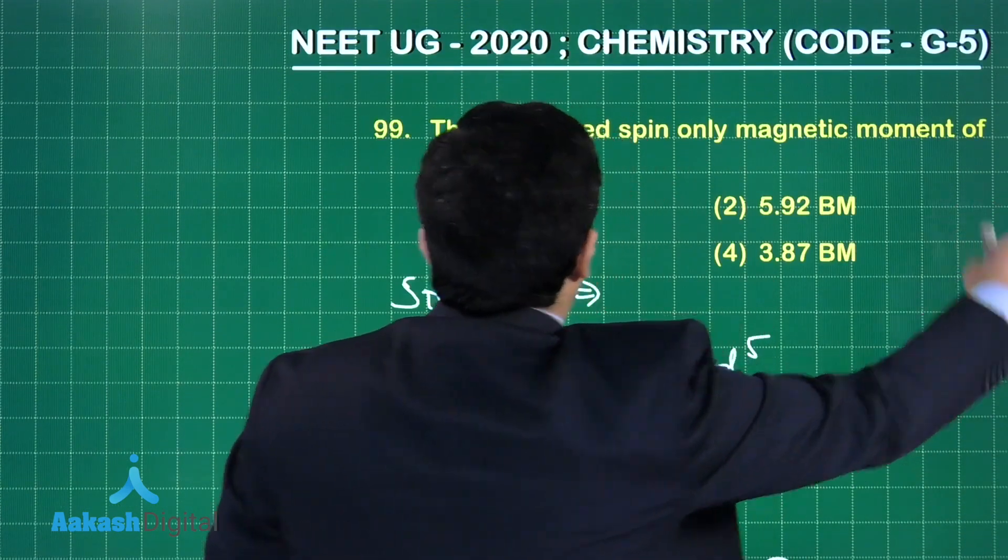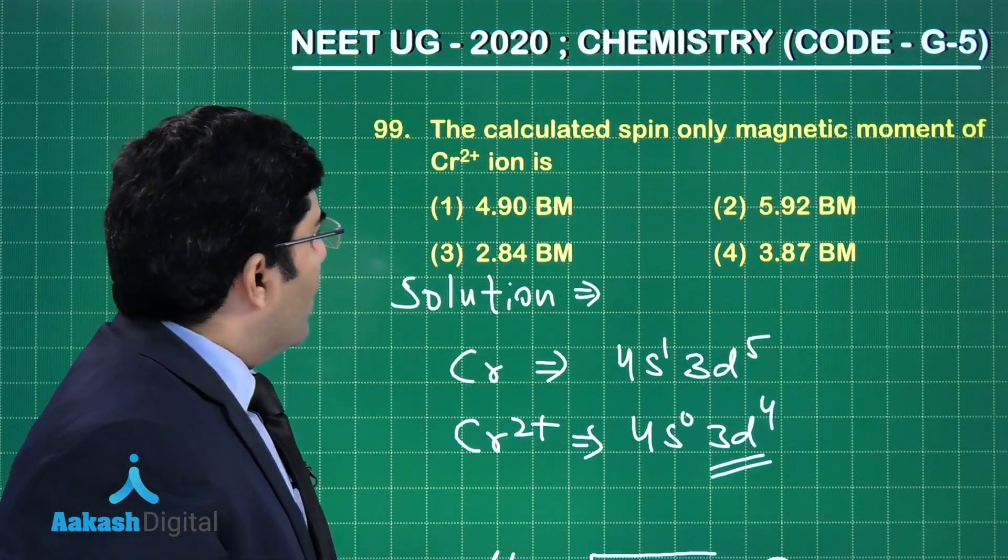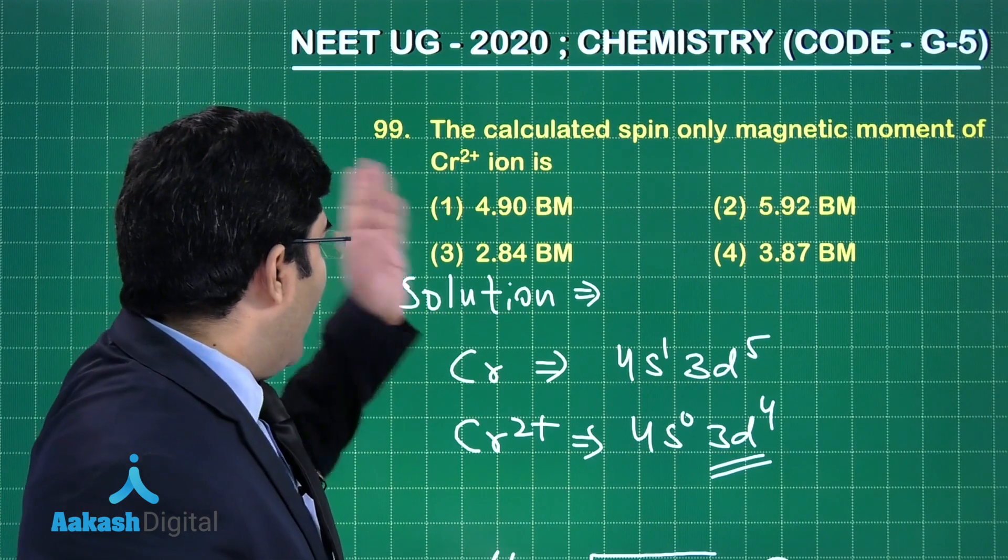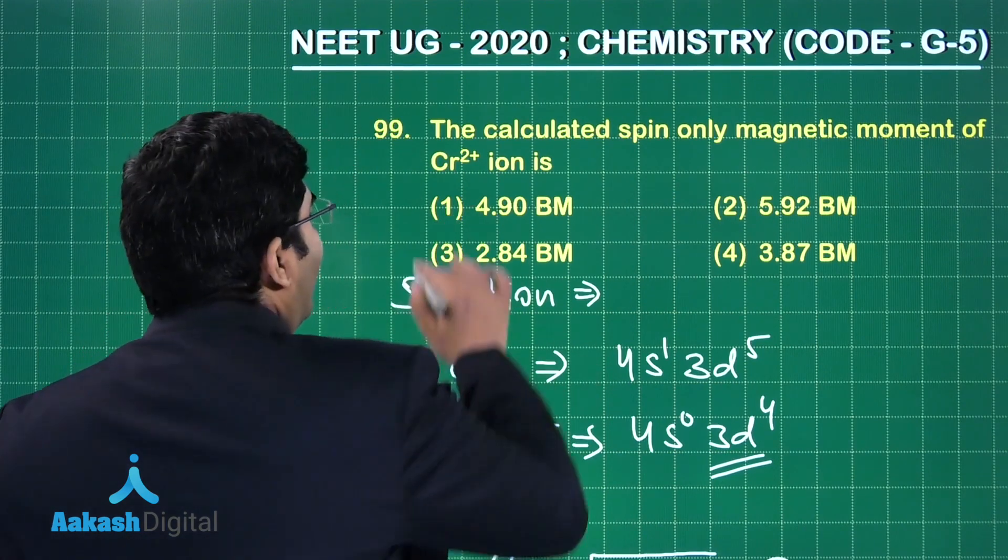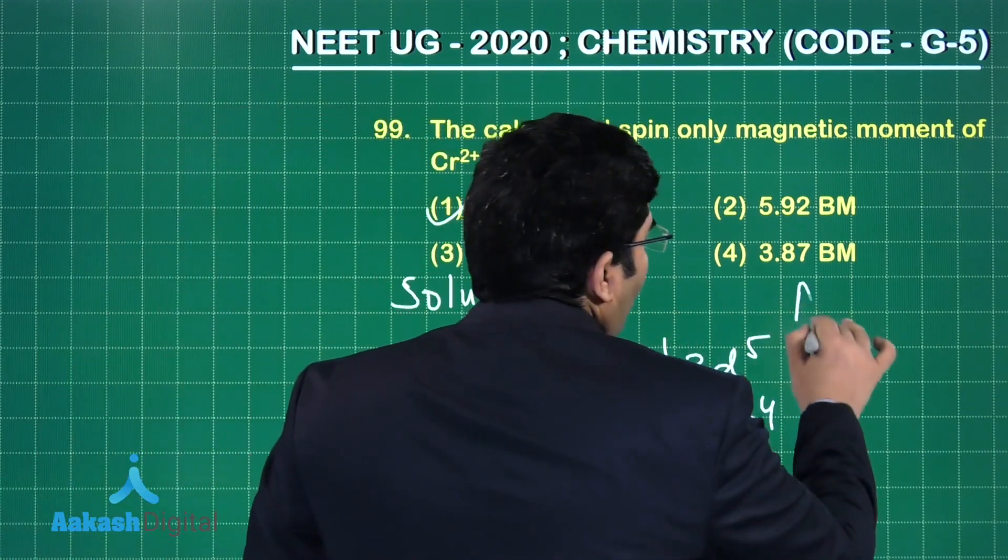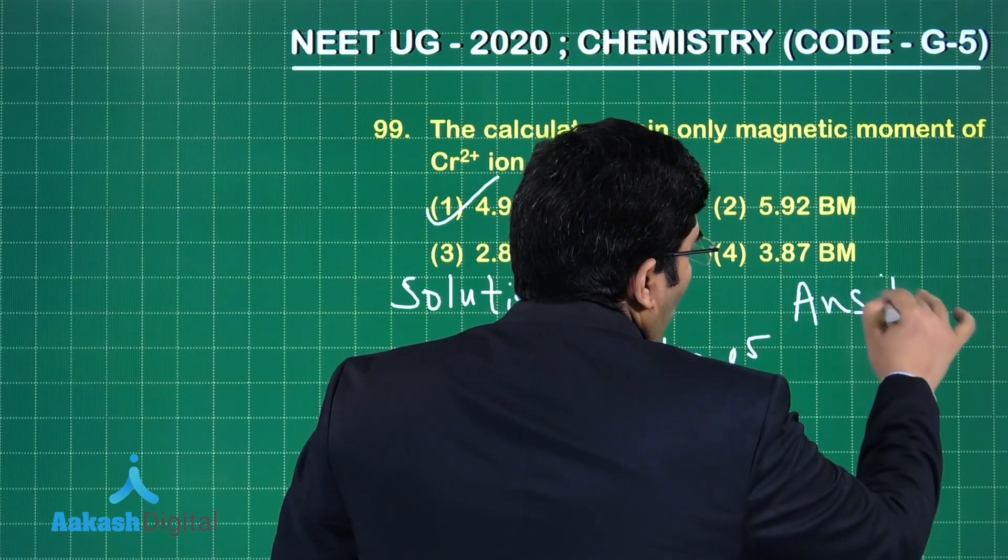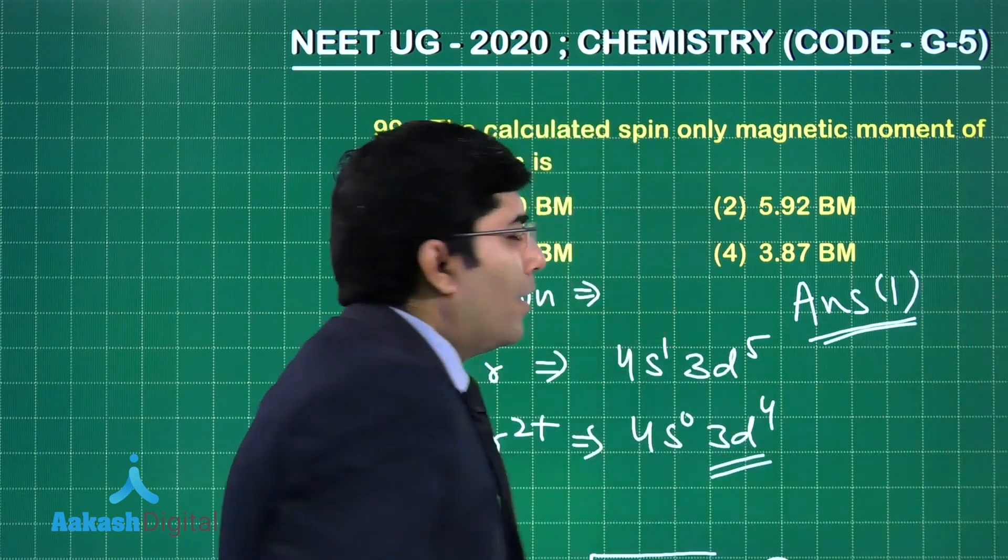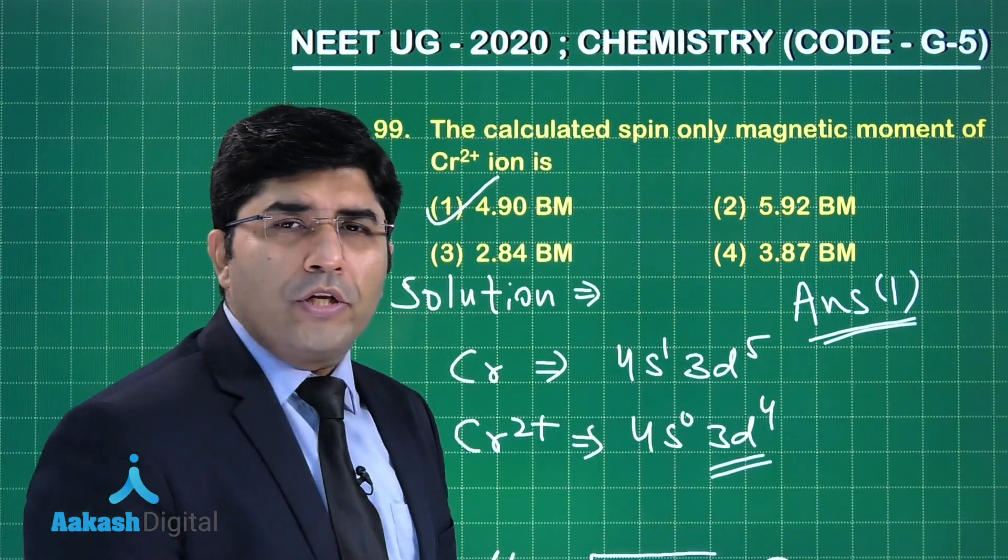This will be in Bohr magneton. And if we talk about the correct answer, here it is the correct answer, that is option number one. So the answer is option number one. Let's move on to the next question.